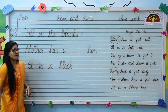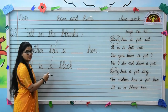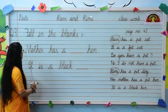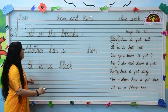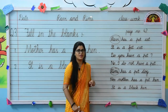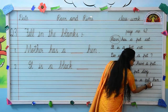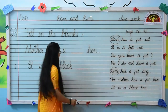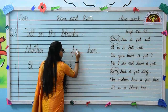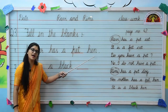Now read question number 3. Fill in the blanks. First fill-up: Mother has a blank hand. So, Remy's mother — what does she have? She has a pet hen. So on the place of blank, we will write pet. Small cursive P-E-T, pet. Mother has a pet hen.